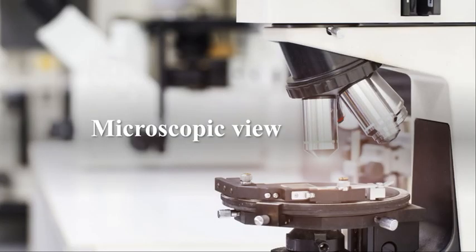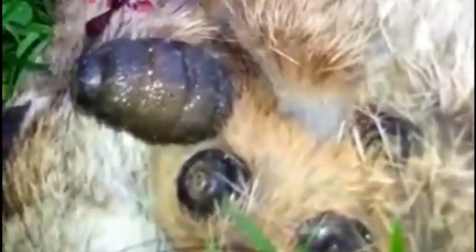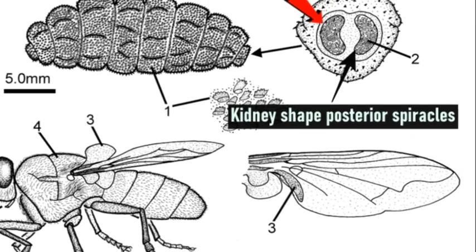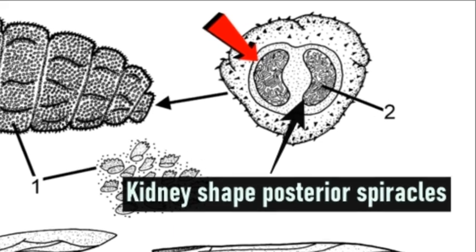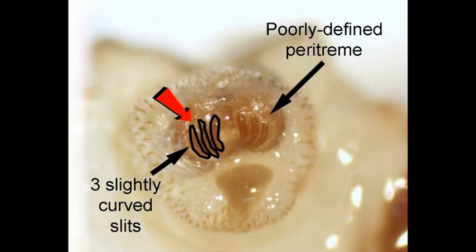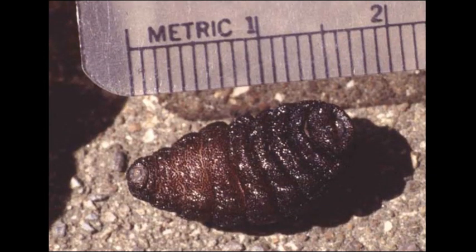We can also diagnose this disease via examination of recovered larvae under a microscope. Larvae of bot fly have characteristic features: if we examine the posterior part, we can find a unique kidney-shaped posterior spiracle with three slightly curved slits. We can also identify bot fly larvae by color — mainly black and gray — and by size, which is typically 1-2 cm in length.